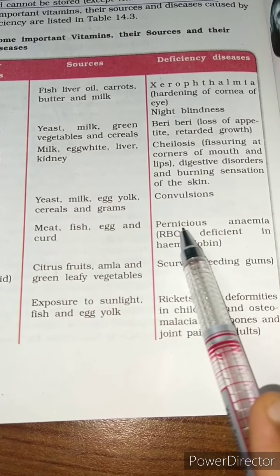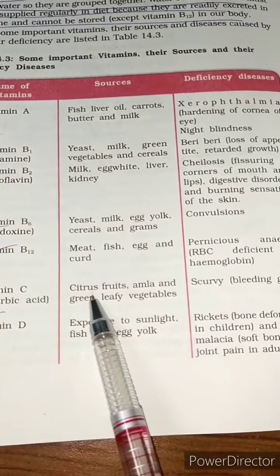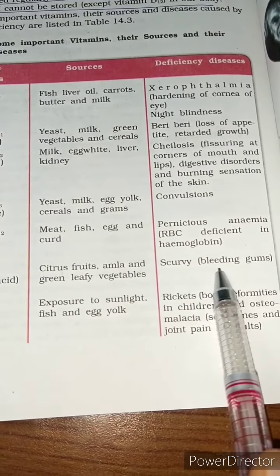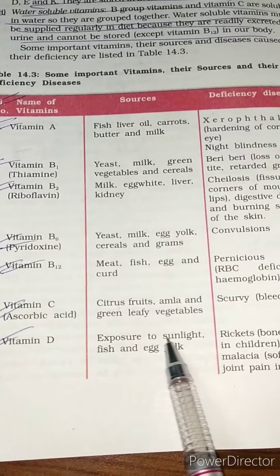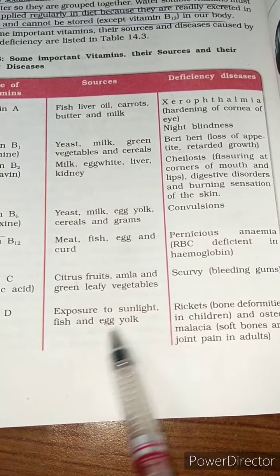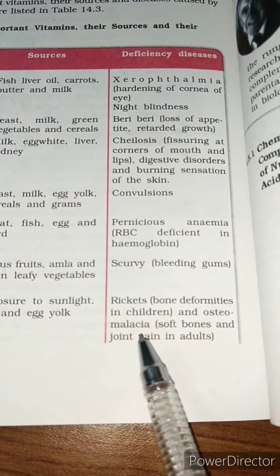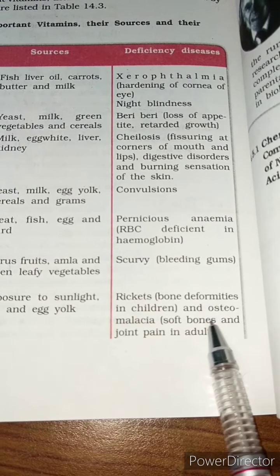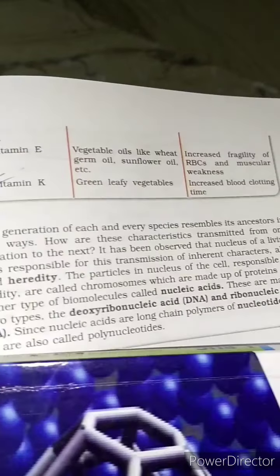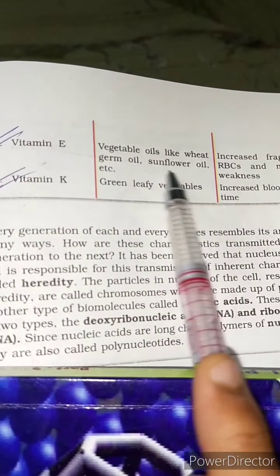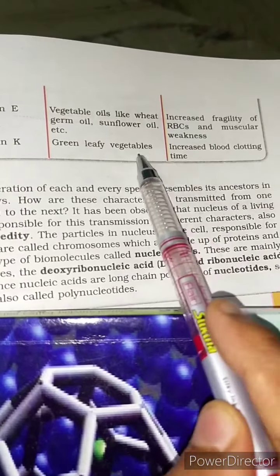Vitamin B6 (pyridoxine) — sources: yeast, milk, egg yolk, cereals, grams; deficiency: convulsions. Vitamin B12 — sources: meat, fish, eggs, curd; deficiency: pernicious anemia (reduced RBC and hemoglobin). Vitamin C (ascorbic acid) — sources: citrus fruits, amla, green leafy vegetables; deficiency: scurvy (bleeding gums). Vitamin D — sources: exposure to sunlight, fish, egg yolk; deficiency: rickets in children, osteomalacia (soft bones) and osteoporosis in adults. Vitamin K — sources: green leafy vegetables; deficiency: increased blood clotting time.